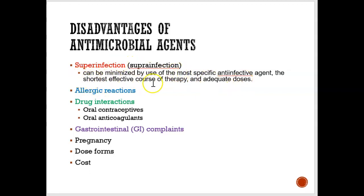Using the most specific antibiotic is the best way to avoid a second infection. We also want a short course of therapy — just take an antibiotic for a few days and then you're done. You don't want a long course because that can make things worse and increase the chance of getting a second infection. So use the most specific antibiotic for your bacteria and the shortest course of therapy possible.